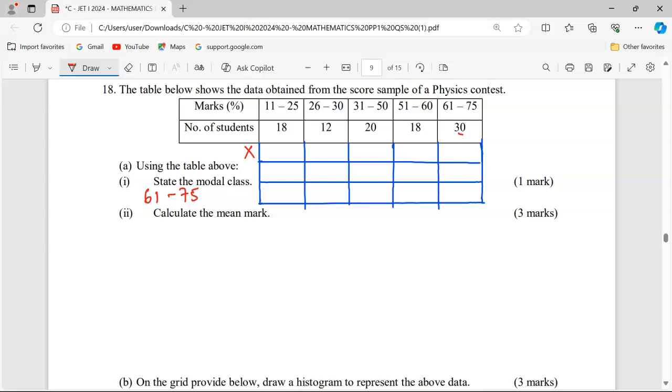The next midpoint is 28, then 40.5, then 55.5, and finally 68.5. So those are the midpoints. Now we need the product of each midpoint and the corresponding frequency.